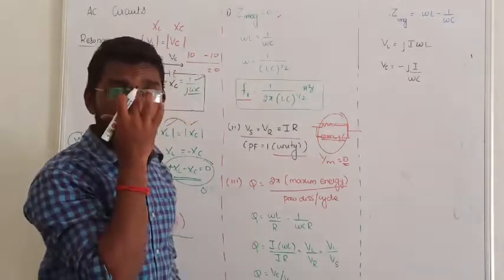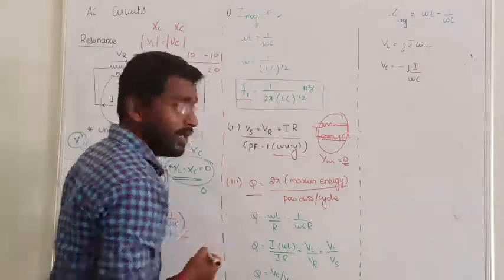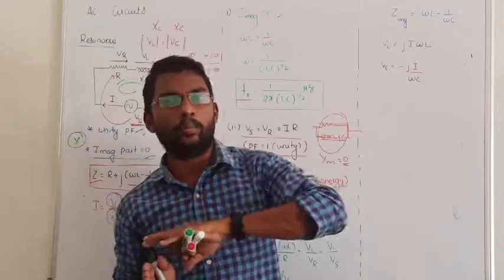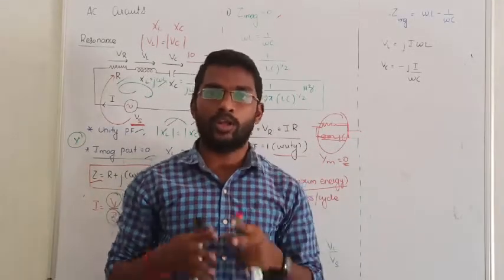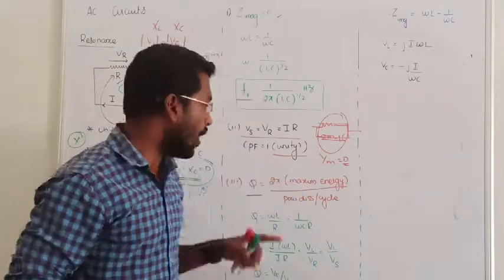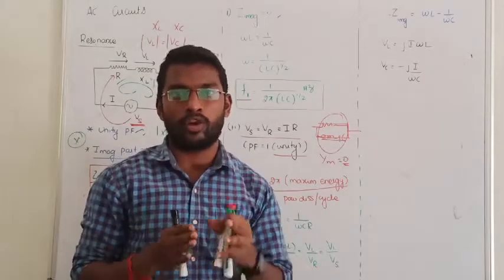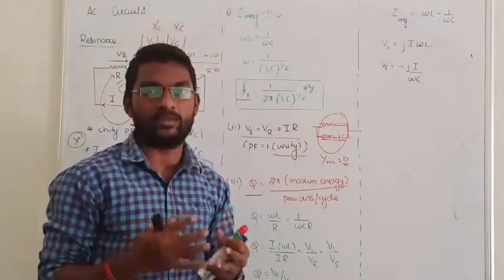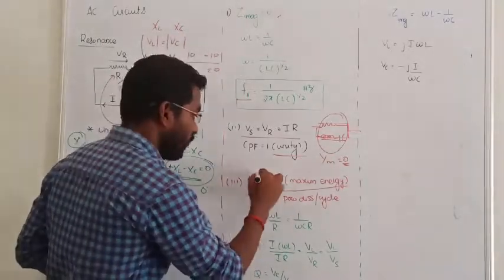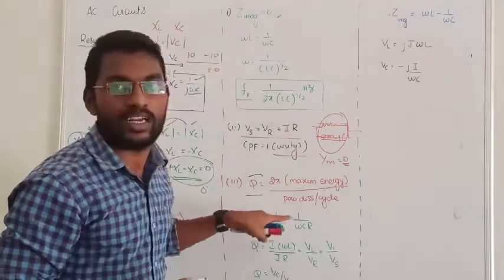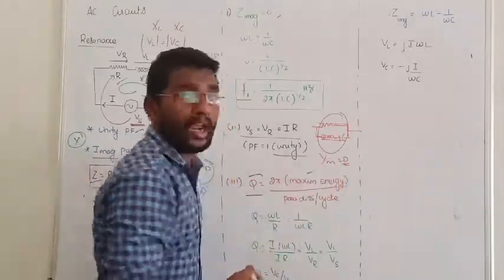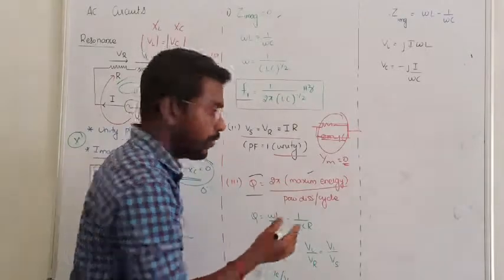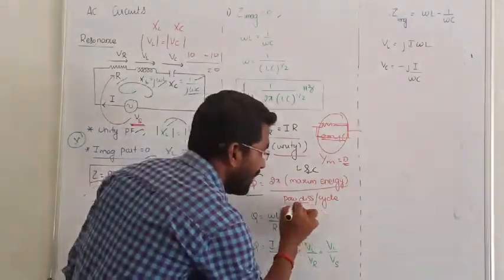Next, we have to calculate the quality factor. What is the quality factor? When we deal with a circuit, we try to maximize the real power transfer. Inductors and capacitors generally consume reactive power. The quality factor deals with how much maximum energy is being transferred. Quality factor Q equals 2π times the maximum energy stored in the storage elements, divided by power dissipated per cycle. The numerator involves the energy in the inductor and capacitor; the denominator is the power dissipated by the resistor.